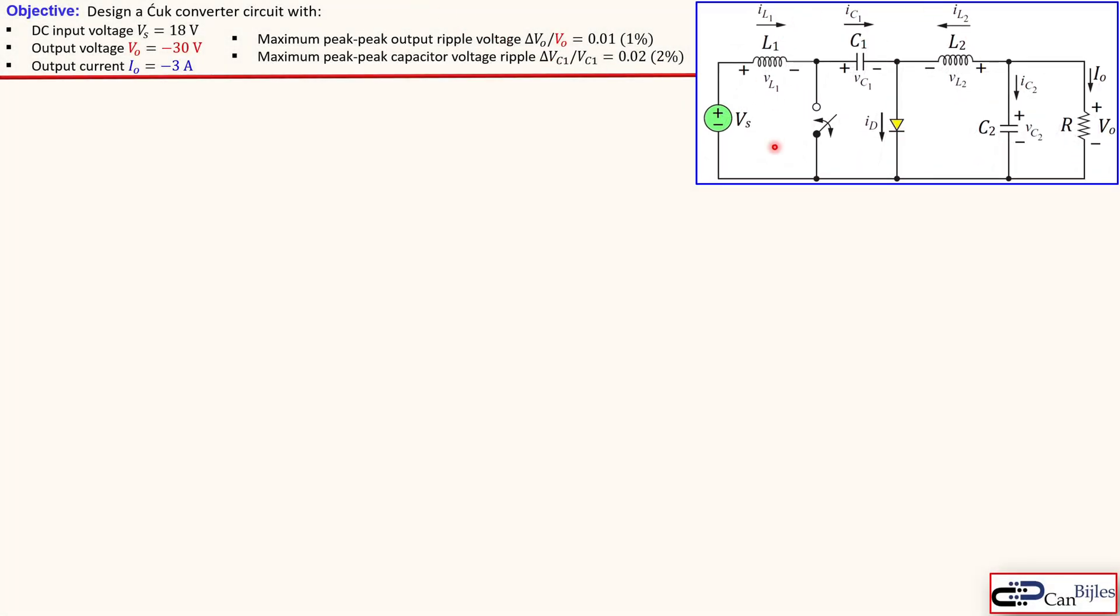Okay, this is the Cuk converter. We see here in this case two inductors and two capacitors, still one diode and one switch. We see also the load resistor here. So in comparison with the other converters where we only had one inductor, one capacitor and also one load, we see here two capacitors, two inductors and the other parts are exactly the same.